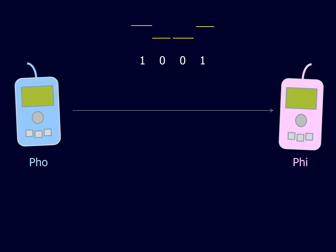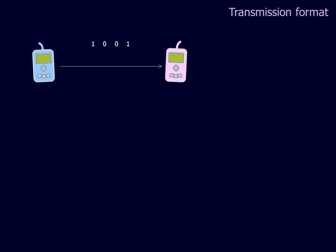There are a number of issues related to data communication. The first of these is transmission format. Transmission format is related to the number of data lines used. In the simplest case, all the data is transmitted sequentially along a single line. This is called serial transmission.